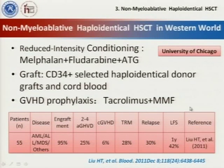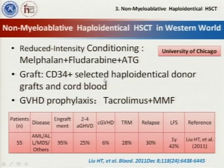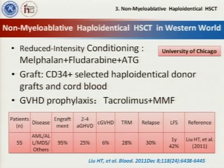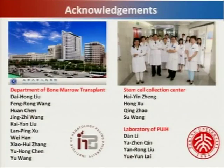The University of Chicago used CD34-selected haploidentical donor cells combined with cord blood for haploidentical transplantation. However, the haploidentical donor only provided temporary engraftment — ultimately, cord blood engraftment was achieved. So I think this is not really haploidentical transplantation, though it is still acceptable. In conclusion, haploidentical transplantation can be a routine alternative stem cell source for transplantation. Thank you for your attention.